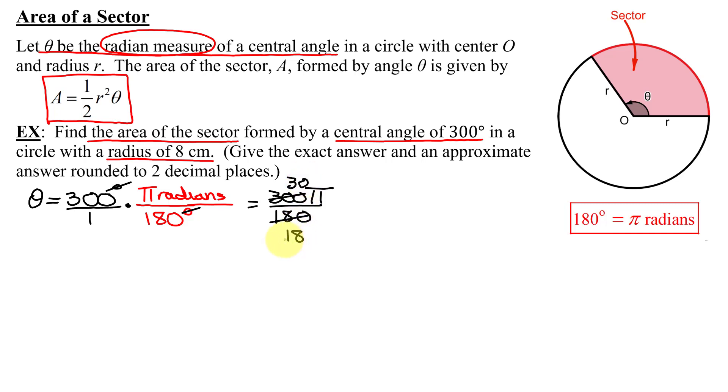Yeah, both divide by 6. 6 goes into 18 3 times. 6 goes into 30 5 times. So my angle is 5 pi divided by 3 radians.